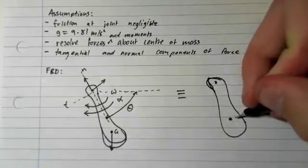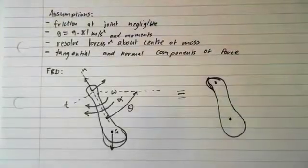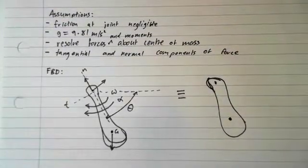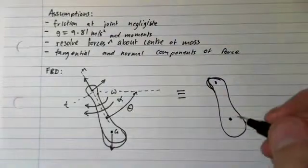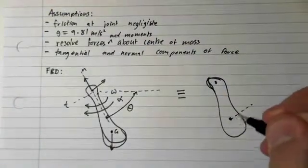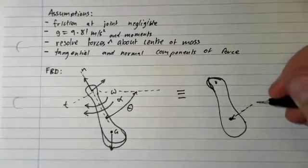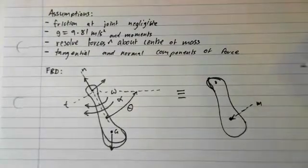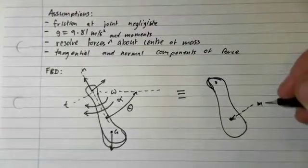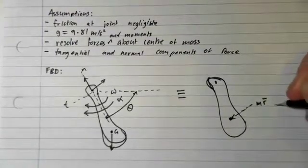This is our center of mass g here. We end up having our motion, or the force causing motion acting in this direction, which is m tangential, so it's m alpha.